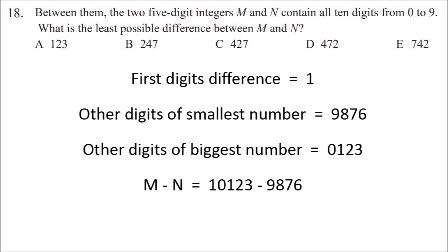So 10,000 minus 9876 is 124 and then 124 add 123 gives the answer to be 247. So the answer is B, 247.